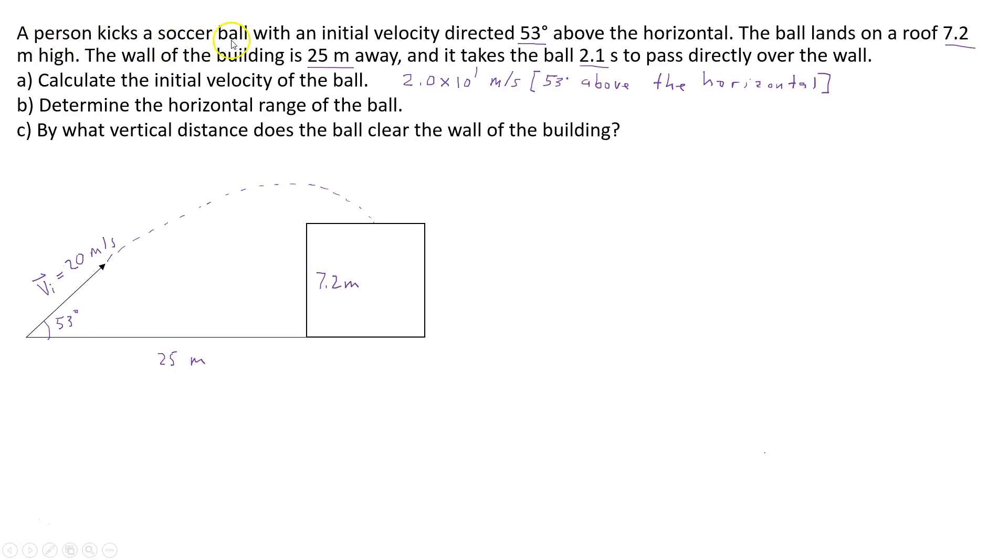So just to refresh on the question. The soccer ball is kicked with an initial velocity directed 53 degrees above the horizontal. The ball lands on a roof 7.2 meters high. The wall of the building is 25 meters away, and it takes the ball 2.1 seconds to pass directly over the wall.